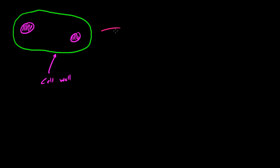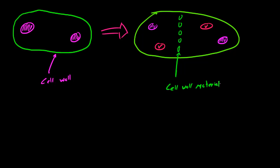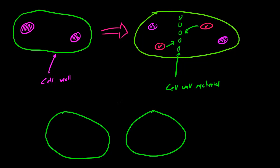So what needs to happen instead — and I'll draw my two nuclei — is that tiny vesicles are going to come in and they're going to carry cell wall material. These vesicles are pretty much like tiny builders carrying cell wall material. What they're going to do is drop it off in the middle of the cell where the new cell wall is going to be. Eventually this new cell wall material is going to fuse together and create the new cell wall, so at the end of cytokinesis in plant cells we end up with a new cell wall and two brand new daughter cells.